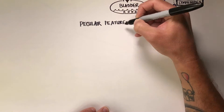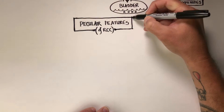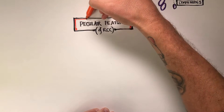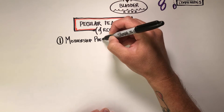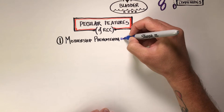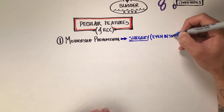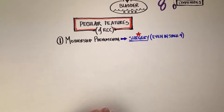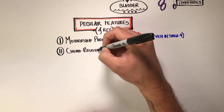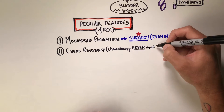Moving to some unique features of renal cell carcinomas — these really do dictate the types of treatment you will be offered. The first is called the 'mothership phenomenon,' unique to renal cell carcinomas. If you remove the primary tumor in the kidney, distant sites of disease are also impacted positively — they will actually shrink and retreat. So even in stage four, surgery is an option, which is unique to this cancer.